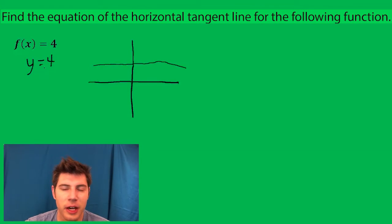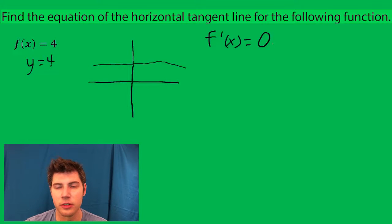But let's actually use some calculus and see how we can prove this. So when we take the derivative of this, f prime of x is just gonna be equal to 0. So it's always 0 as our slope. So then we have to ask ourselves, where does the function have a slope of 0?